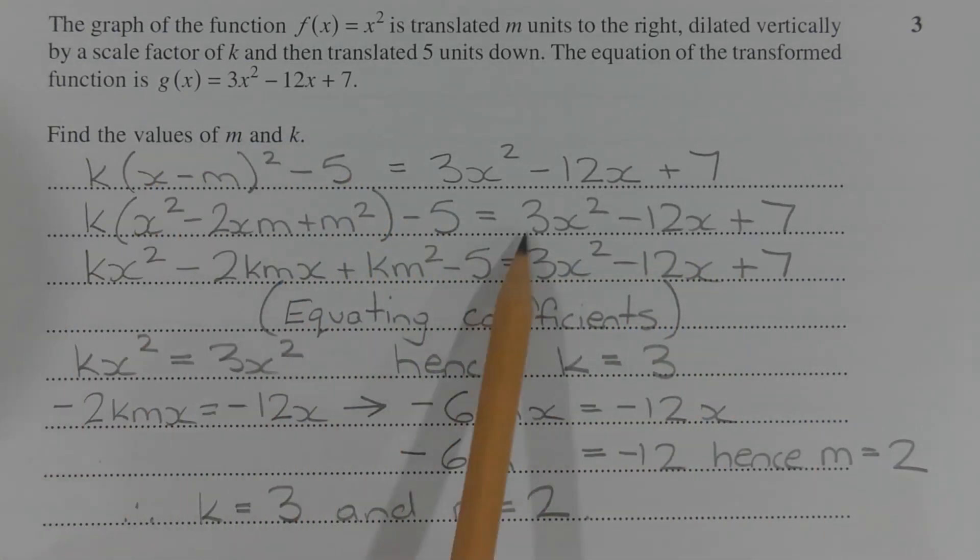Expanding the brackets on the left hand side by multiplying through by k, we have kx squared minus 2kmx plus km squared minus 5 equals 3x squared minus 12x plus 7. Equating coefficients on both sides of the equation,